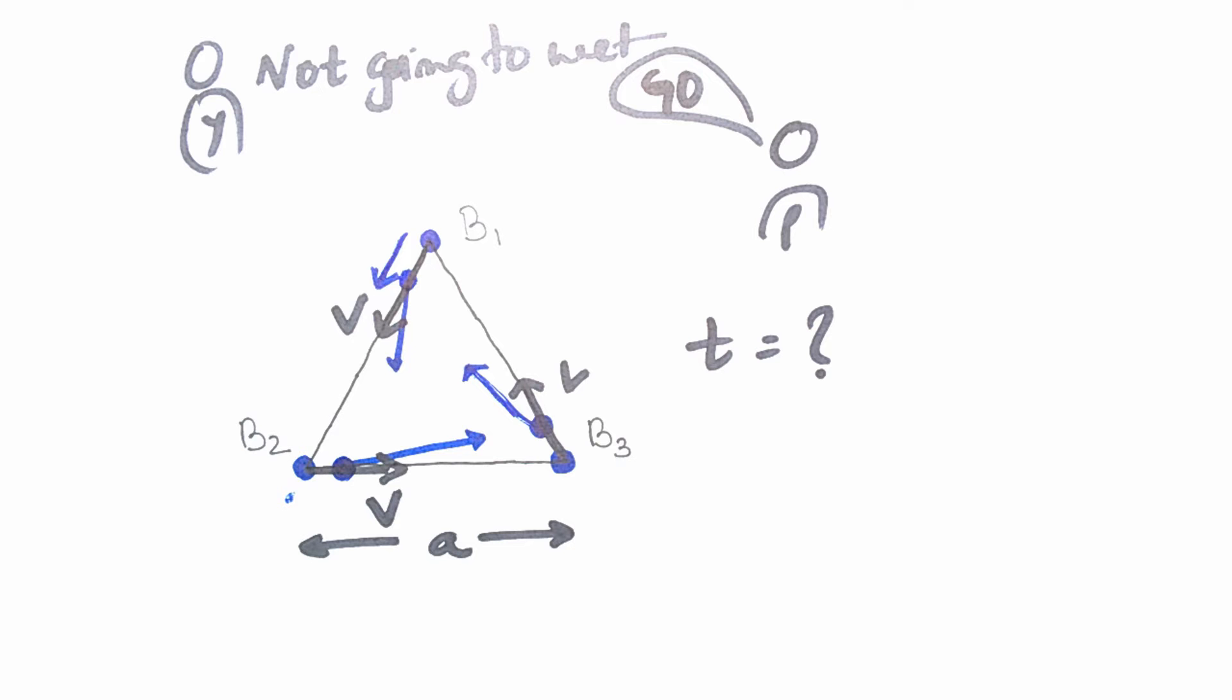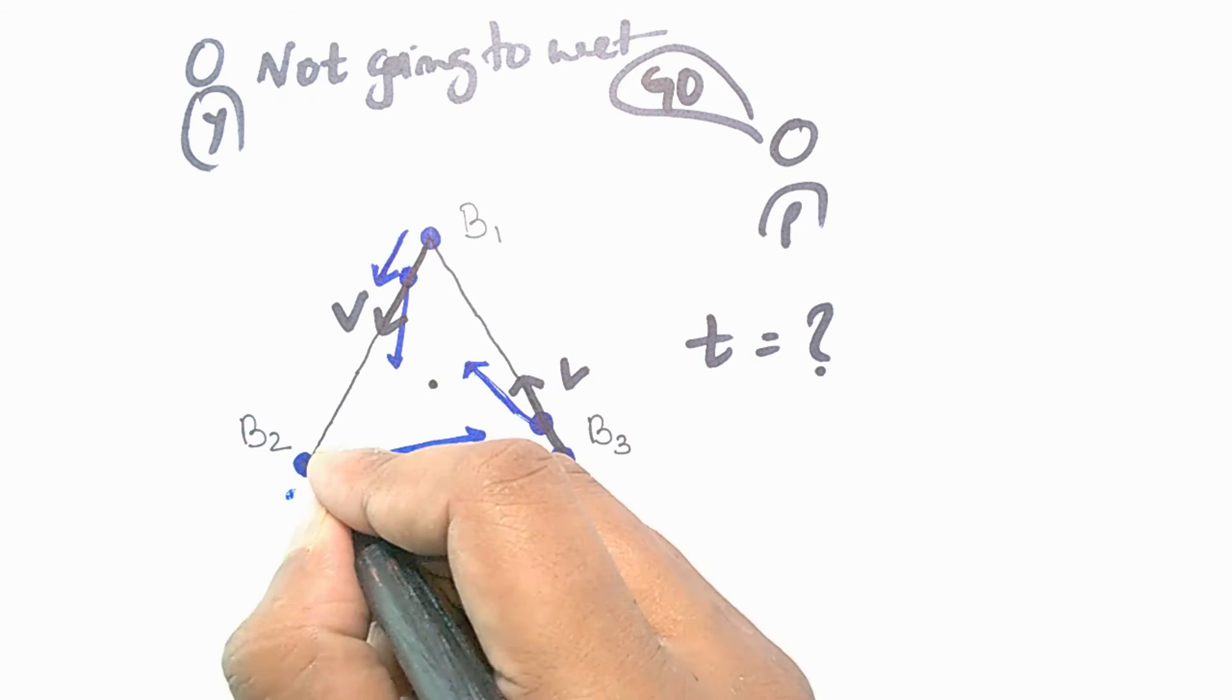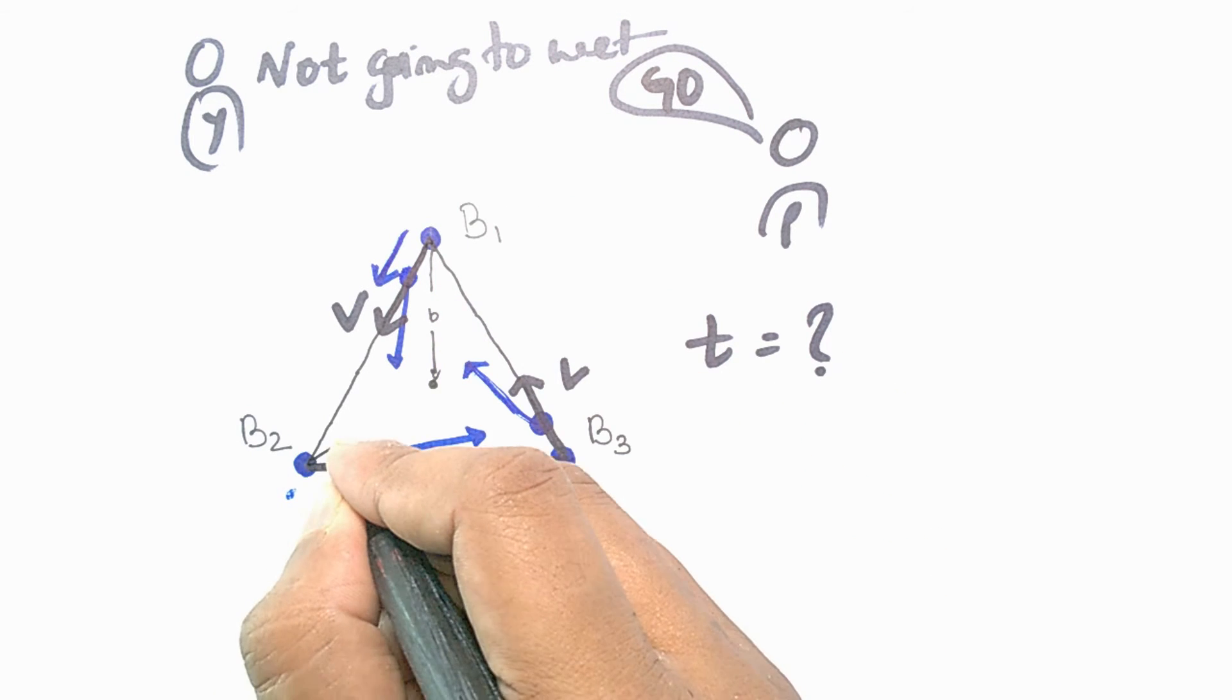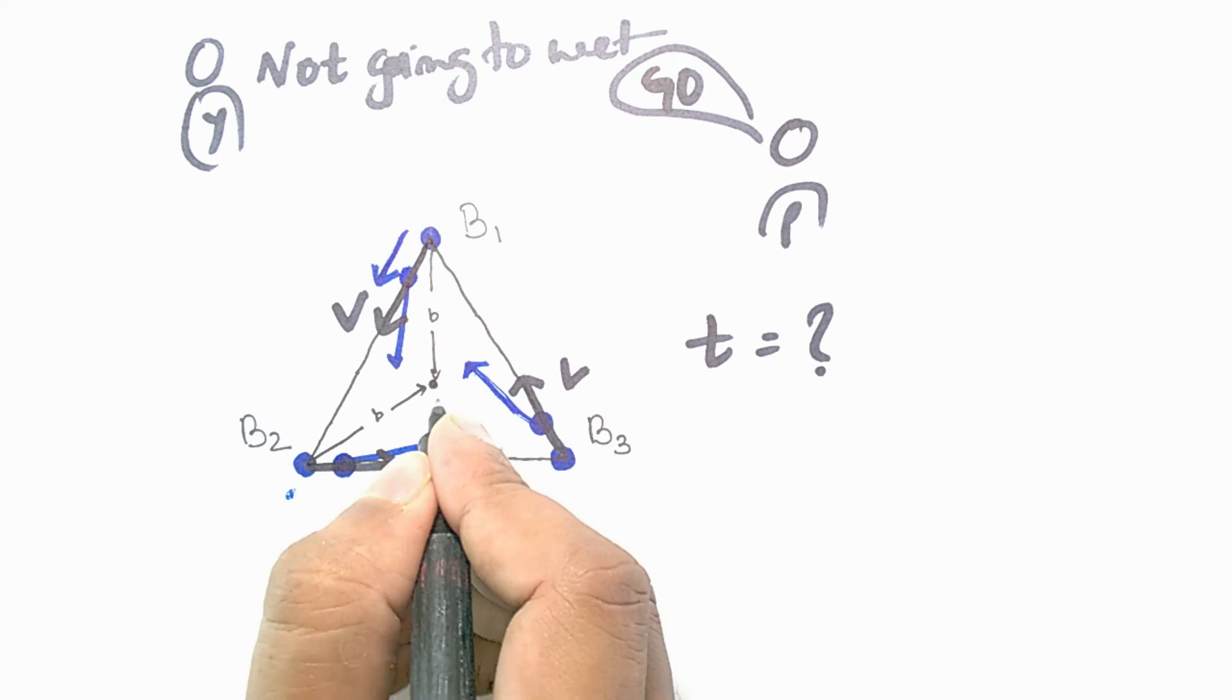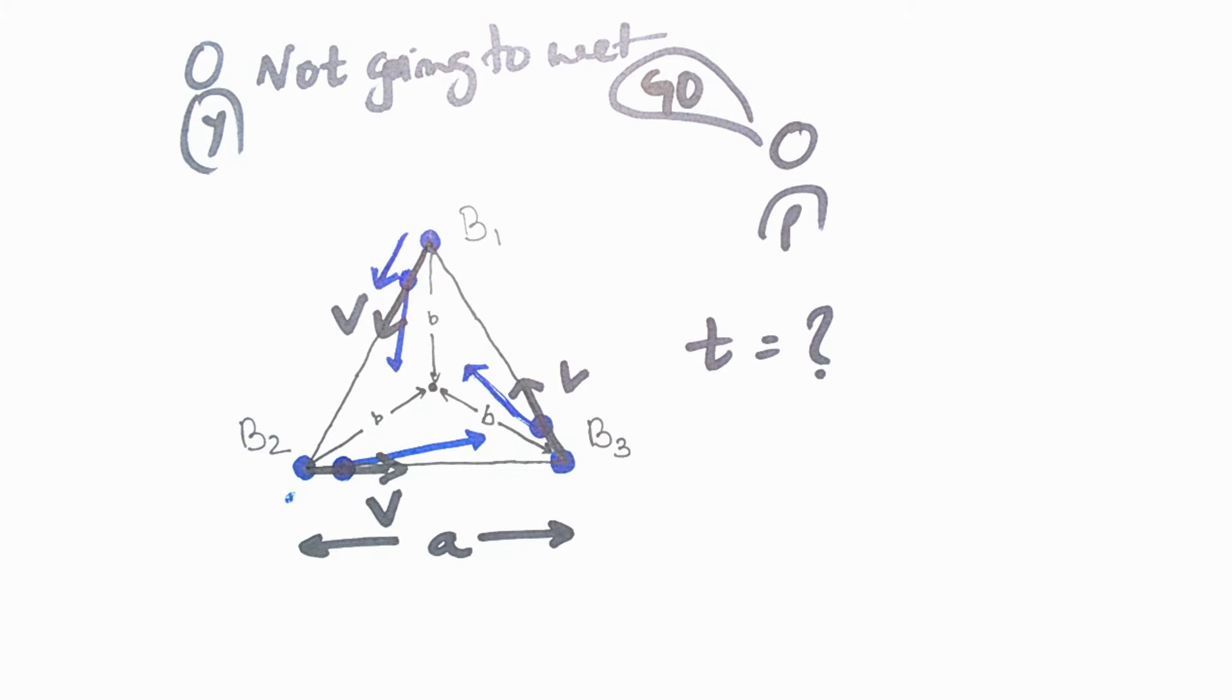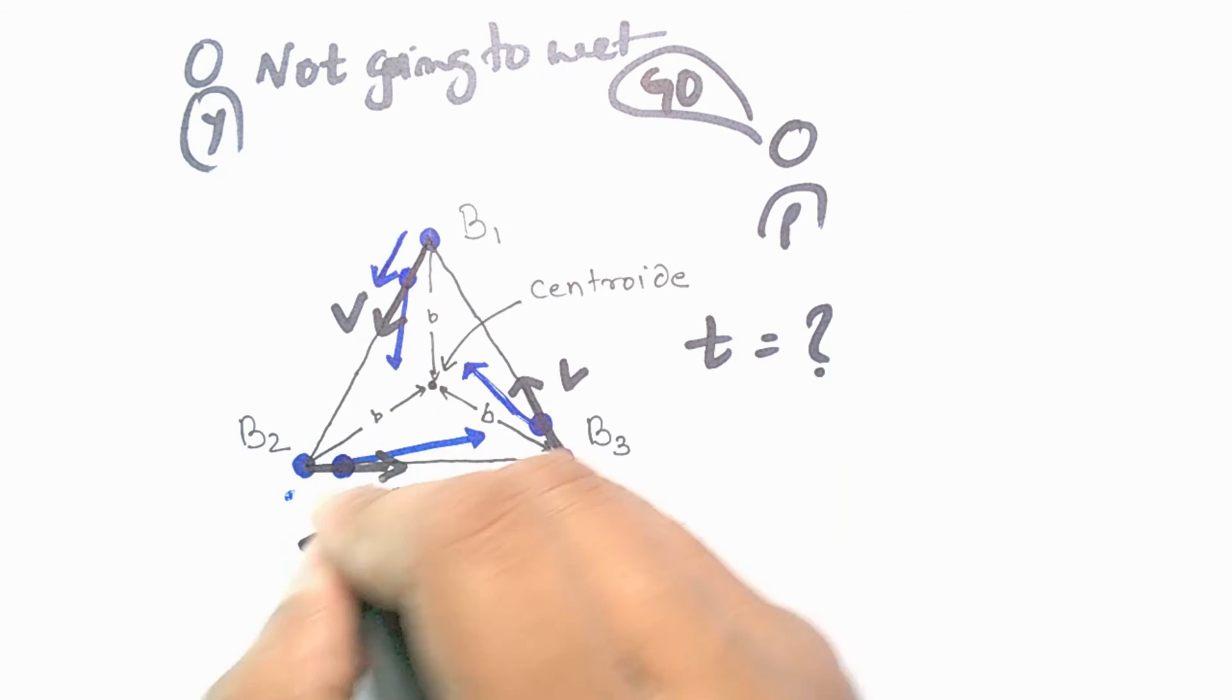Now after knowing all of this, can you calculate the time? You have the free will to pause the video or continue. So if you are giving proper notice to the situation, you might have been thinking that every triangle has a point which is equidistant to all the vertices and that point is called the centroid of a triangle.